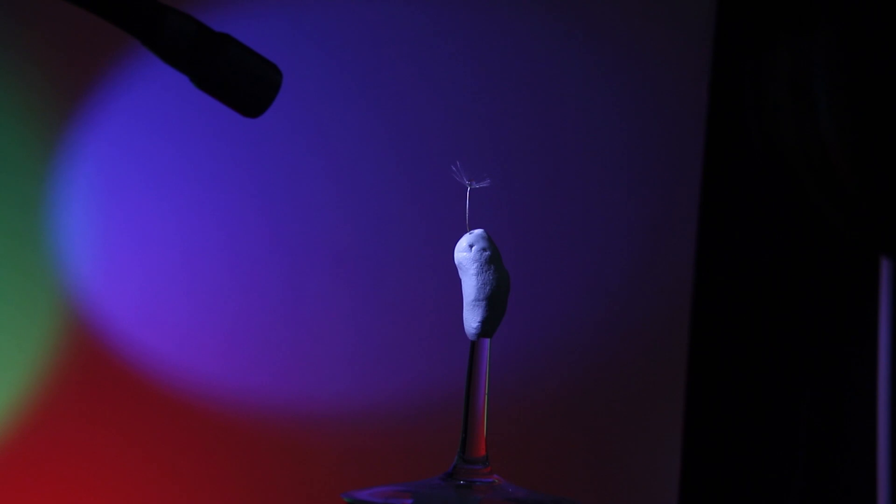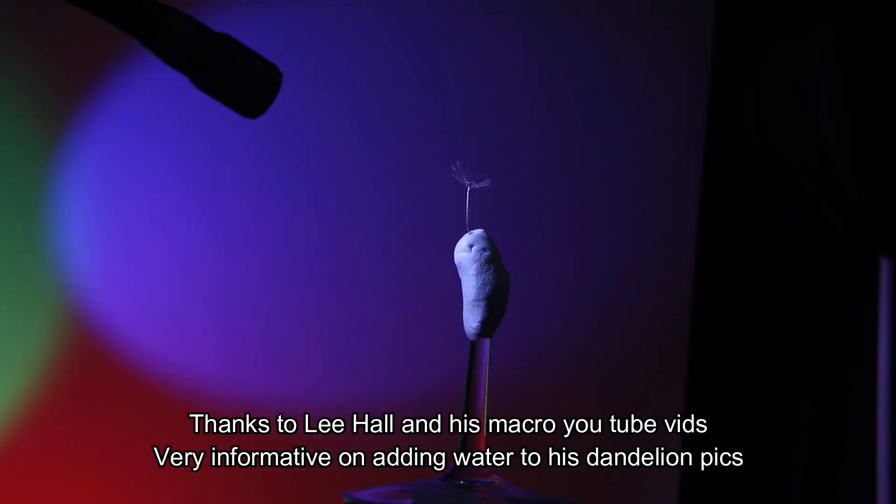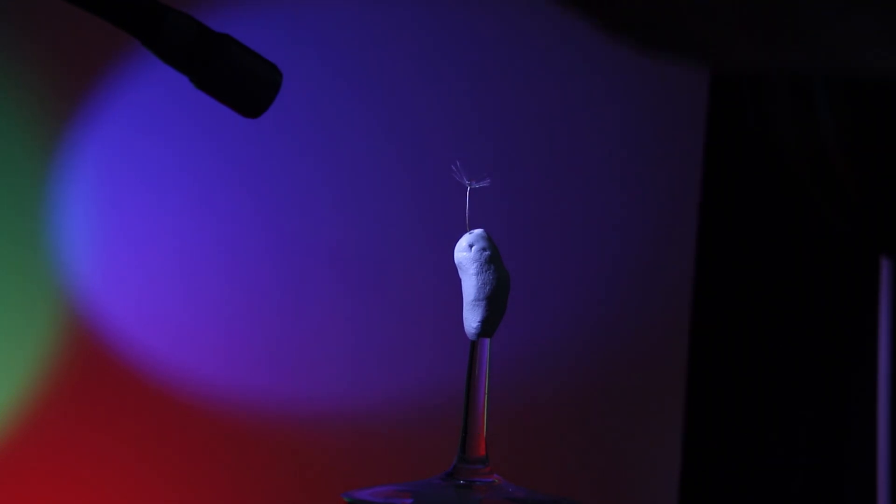Now what I'm going to do is add water droplets to all the bristles on the seed. You do this by adding water with the mister. Making sure you protect the camera at the same time. I just put a cloth over the end of the camera just to protect it.